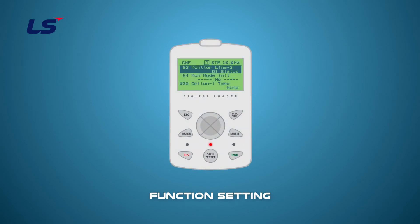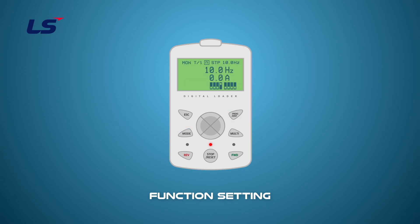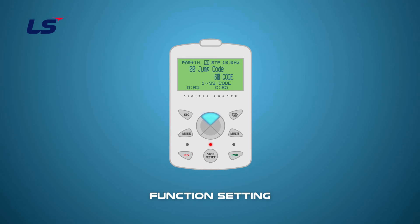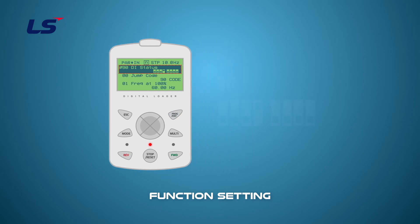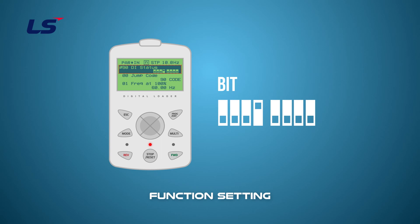To check the status of the digital input of the terminal on the keypad window, select 7 DI status at CNF23. Alternatively, it can be checked in IN GROUP 90 DI status in parameter mode. This parameter shows the status of the input by bit, displaying the input status of terminals P1 to P7 from right to left. With this bit, you can check if the multi-step signal is entered correctly.